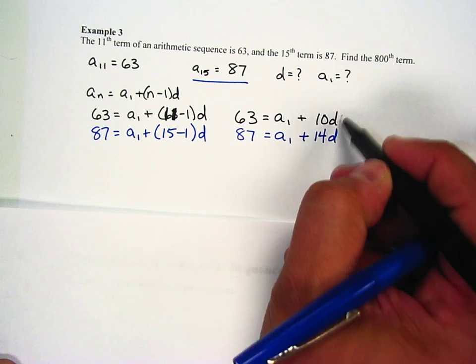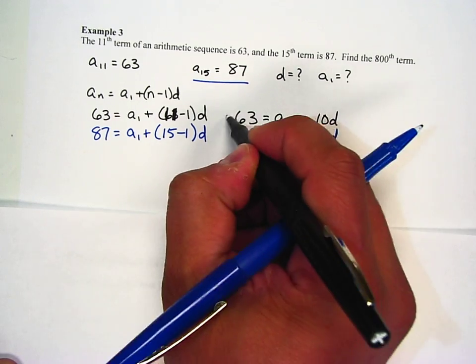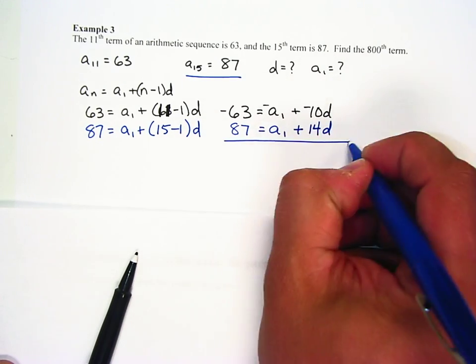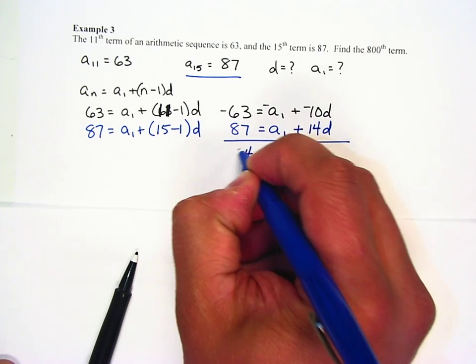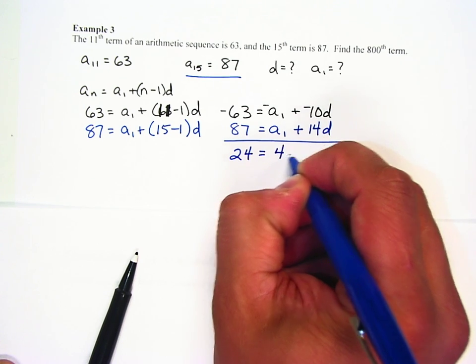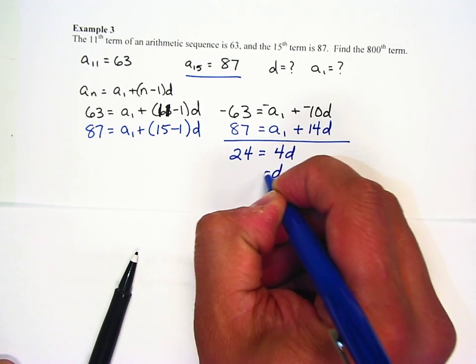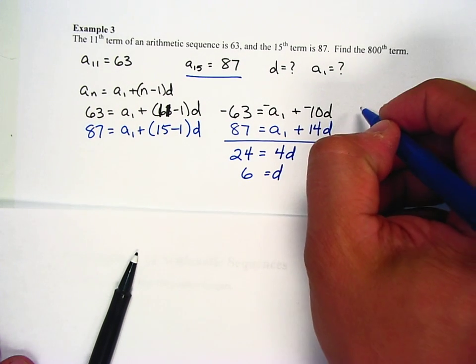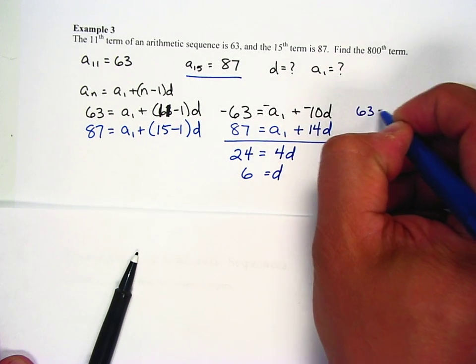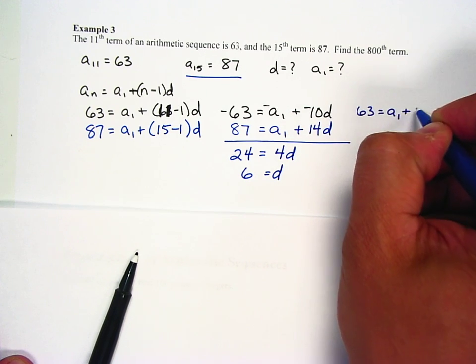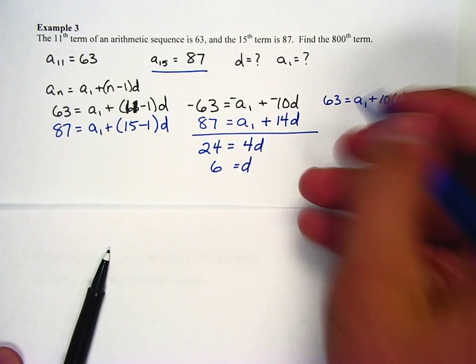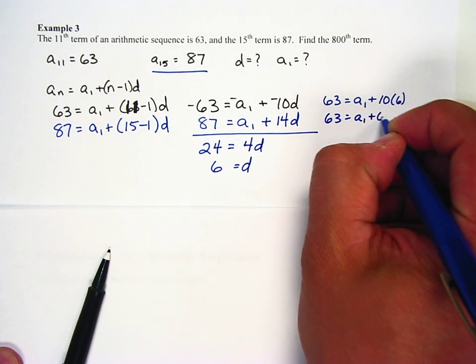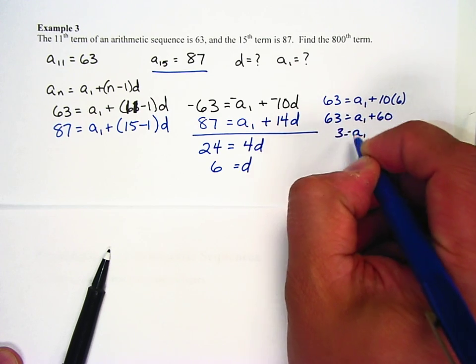I have a system of equations. Two equations, two variables. I'm going to make the top one negative. And the a sub 1s are going to cancel out. And that's going to give me 24 equals 4d. So d must be 6. I can plug that back in. And I can say 63 equals a sub 1 plus 10 times 6. 63 equals a sub 1 plus 60. a sub 1 must equal 3.